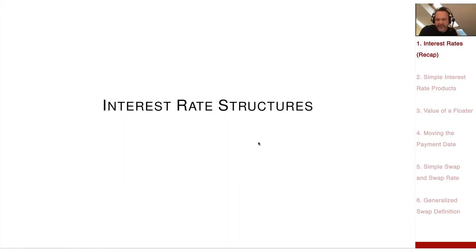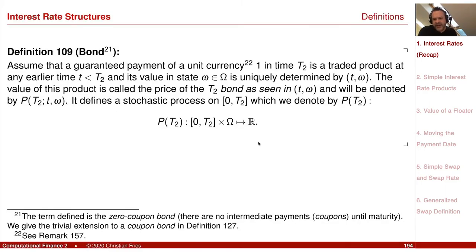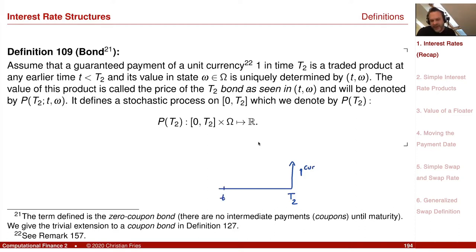In our session on interest rates, I already introduced basic interest rates, and the basic object we used was the value of a zero coupon bond. We have a payment of one unit of currency at a future point in time T2. I ask: what is the value at time little t? This value we observe at time little t, and the mapping t to P(T2; t) is a stochastic process — that object is allowed to change randomly.